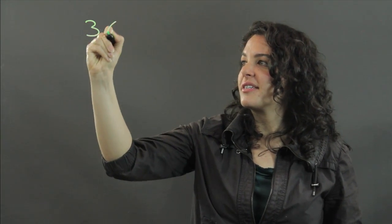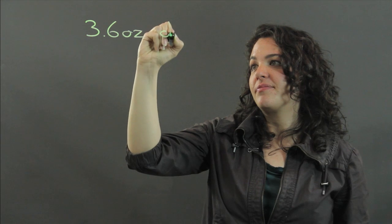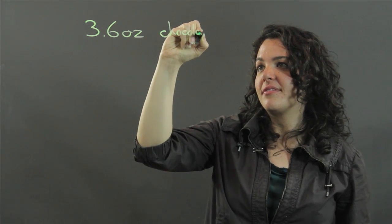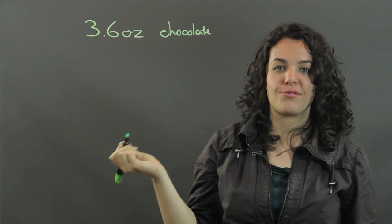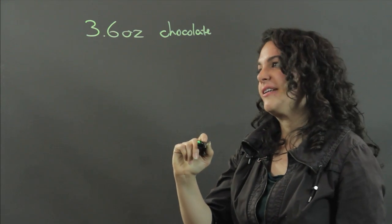So we've got 3.6 ounces of chocolate. Really, this works for 3.6 ounces of anything, but we've got chocolate here.